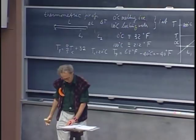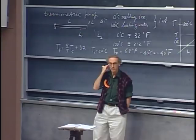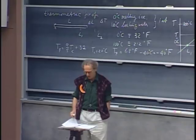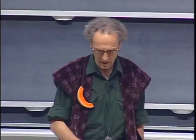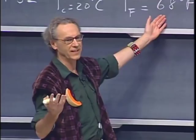Almost the entire world uses the Celsius scale — it's part of our metric system. The United States is one of the very few countries who still, in a rather stubborn way, uses degrees Fahrenheit. I just happen to know that room temperature is 68, because that's the way I set my thermostat at home. I can't think in terms of degrees Fahrenheit.